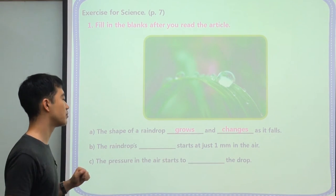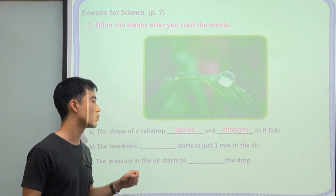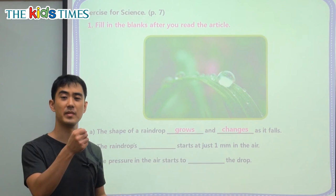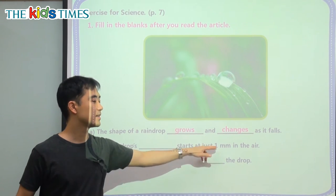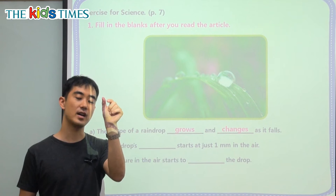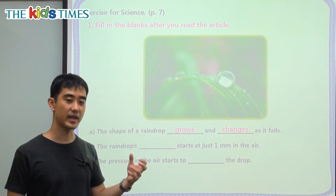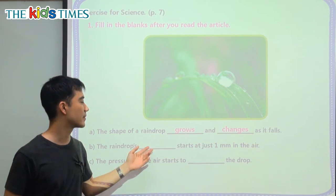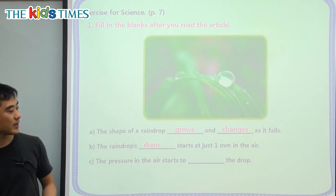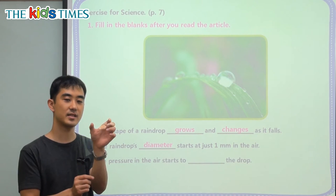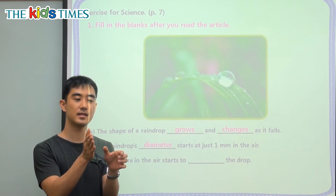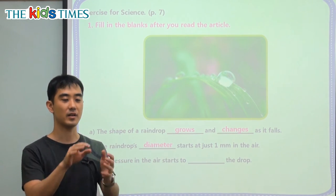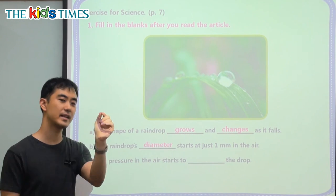B: the raindrop's blank starts at just one millimeter in the air — it's very, very small, like a little mist. We're talking about the size of the raindrop and we learned the vocabulary word that starts with D. It's diameter. Diameter is the size from one end to the other end of a circle or a circular thing, like a ball or like a raindrop. We call that the diameter.